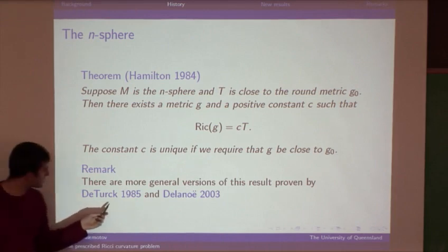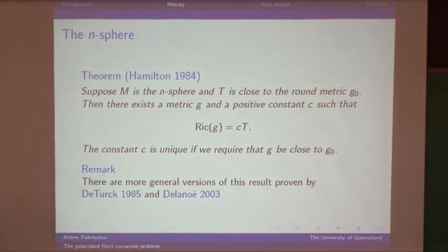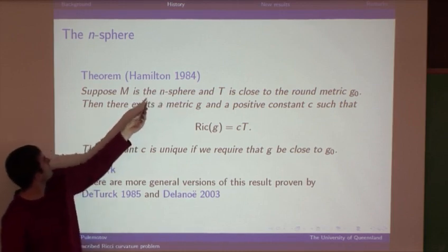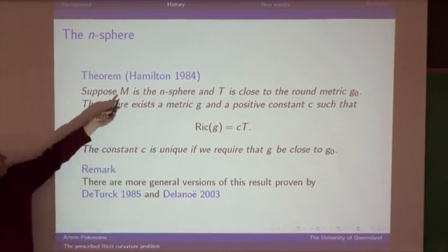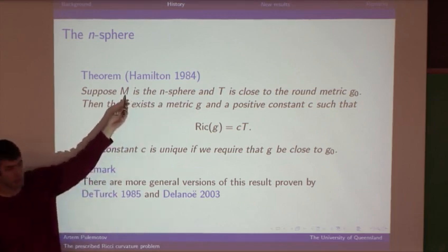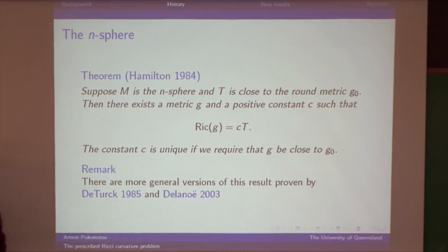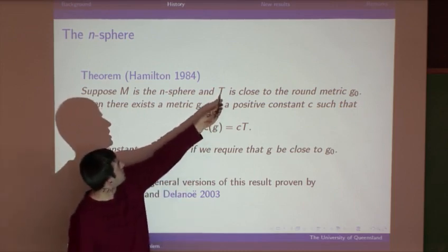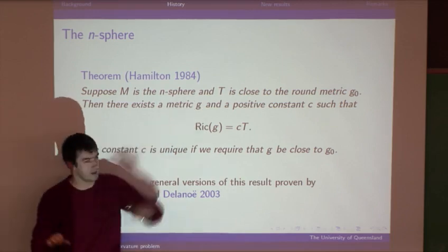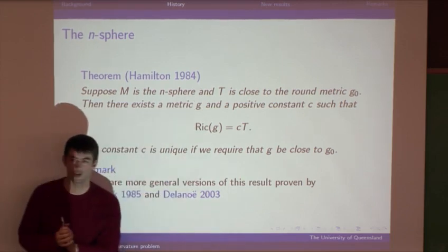The Deterk and Delano theorems are somewhat more general versions of Hamilton's result. Both show that you can replace the sphere assumption with other assumptions on the manifold M — so M doesn't have to be a sphere — but there are still rather strict requirements on M. And both Deterk and Delano require that the tensor T be somehow close to some canonical Einstein metric on the manifold.